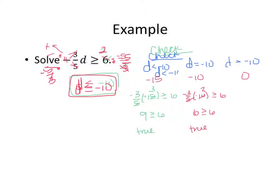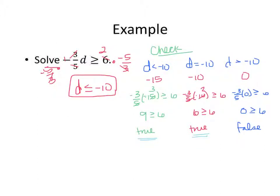If we plug in 0: negative 3 fifths times 0 gives us 0, and 0 is greater than or equal to 6 is false. So notice the two that worked are the less than case and the equal to case — both of those are in your answer: less than and equal to.